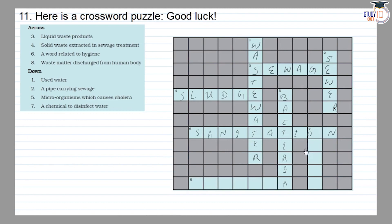The seventh is a chemical to disinfect water — ozone. The eighth is waste matter discharged from the human body — excreta.